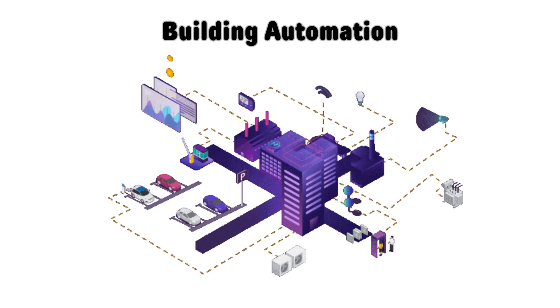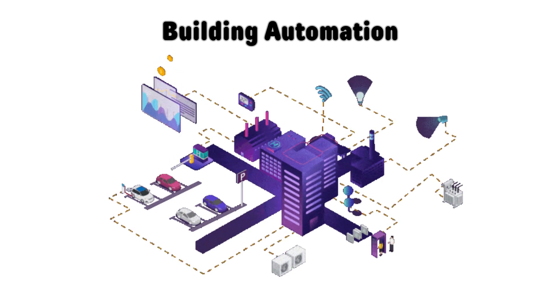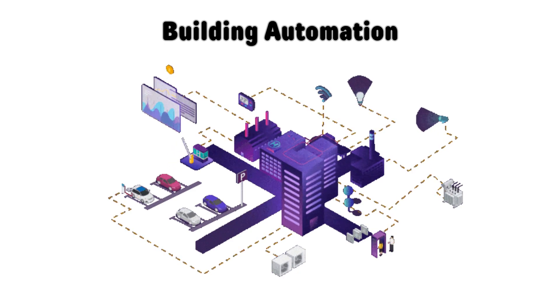Building Automation. SCADA systems are utilized in commercial buildings, hospitals, and industrial complexes for building automation and management. They control HVAC, heating, ventilation, and air conditioning systems, lighting, access control, and energy management.